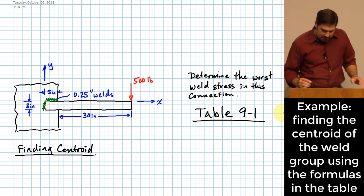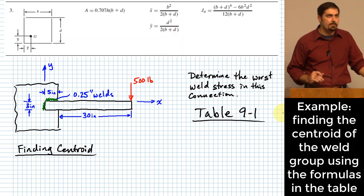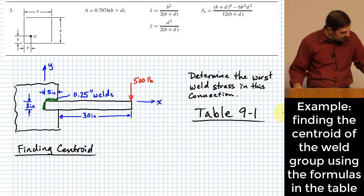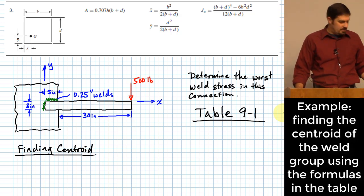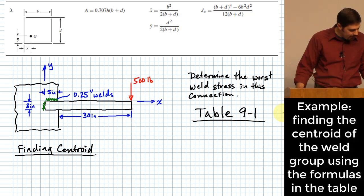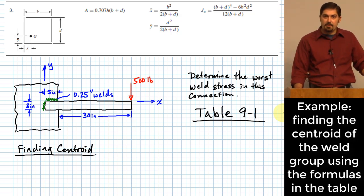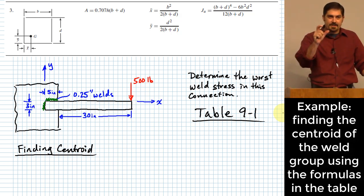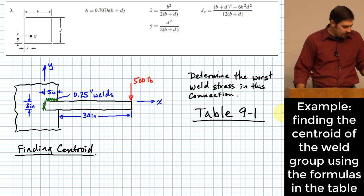In the book, the x-direction matches with dimension b, so dimension b is acting in the x-direction. The two centroid equations have the same denominator, but the numerator of the x-direction has that b term. All we need to do is match the dimension we're measuring to the same direction and use the correct equation. If we define the corner point up here as our origin, the x-coordinate for the centroid is x-bar equals b squared over (2b + d).